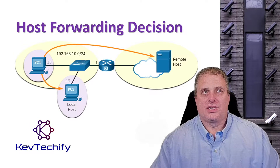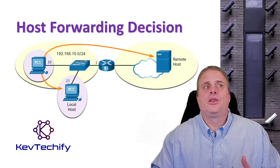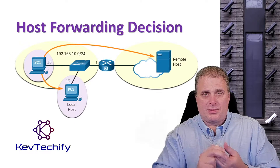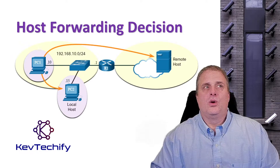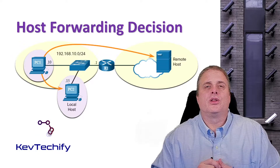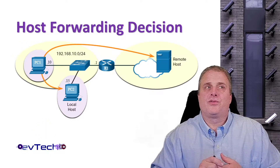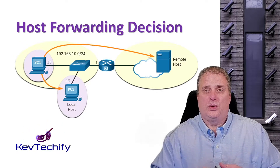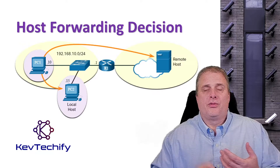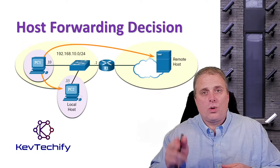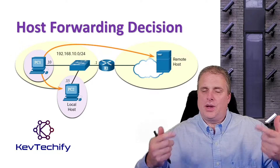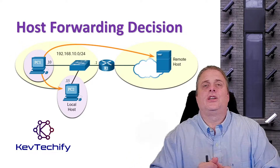A host can send packets to three types of devices. One is itself, which is typically called the loopback address. For IP version 4, that's 127.0.0.1. For IP version 6, it's ::1. Those are the loopback addresses — it's basically like talking to yourself.